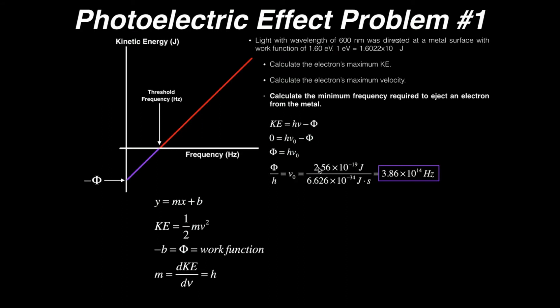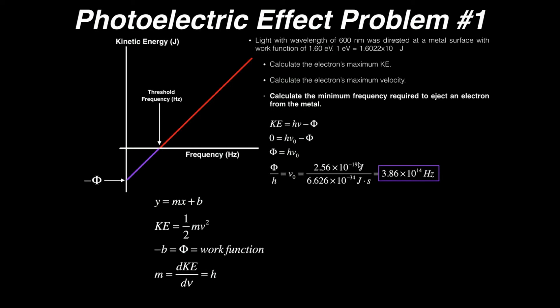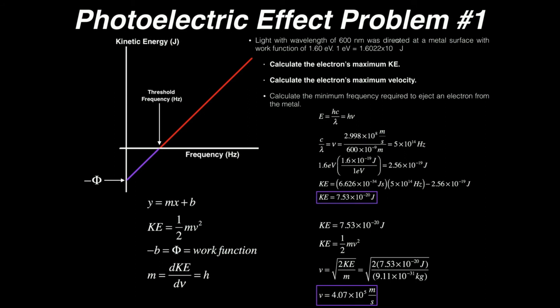So we take the work function we calculated — 2.56 times 10 to the minus 19th joules — and divide by Planck's constant, 6.626 times 10 to the negative 34th joule seconds. We get the threshold frequency nu naught: 3.86 times 10 to the 14th hertz. This is the minimum frequency required to eject an electron from this metal, according to Einstein's photoelectric effect.